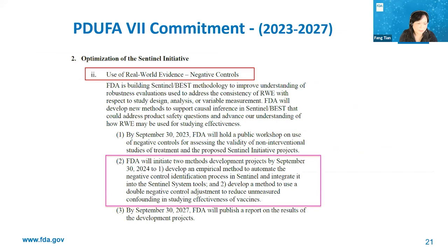These slides outline the PDUFA-7 commitment in the next five years to continuously support Sentinel methodology development for use of real-world evidence on drug safety and effectiveness studies. The FDA is committed to hold one public workshop on negative controls—that's the reason we are here today. In addition, the FDA will initiate two demonstration projects: one to develop an empirical method to automate the negative control identification process in Sentinel and integrate it into the tools; the other to develop a method to use double negative control adjustment to reduce unmeasured confounding in vaccine effectiveness studies. By end of PDUFA-7, the FDA will publish a report on the results of these projects.